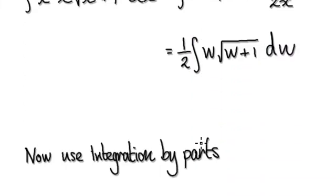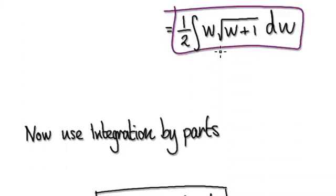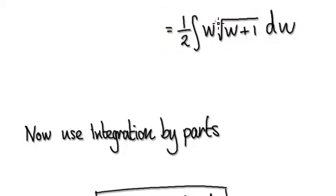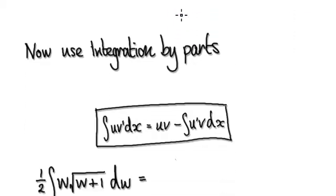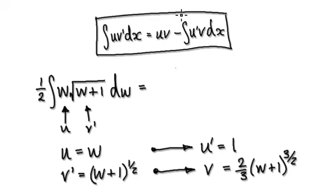So we are currently here at the moment. Use integration by parts. So you let this be u and so on. So from here, use integration by parts. So let this bit be u and then let this thing here be v prime. So u equals w, and v prime equals the square root of w plus 1.